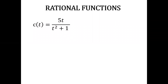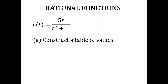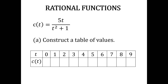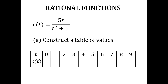To construct the table of values, we first assign values for t. Since t represents time, t should be positive numbers only. We set t = 0, 1, 2, 3, 4, 5, 6, 7, 8, 9. To get the concentration with respect to time, all we have to do is substitute the given value of t into the function.